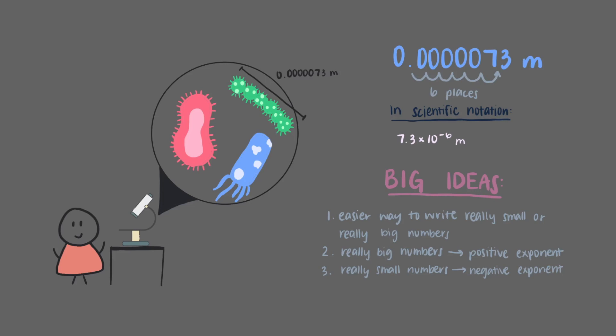When we have really big or really small numbers that contain lots and lots of zeros, it's easy to make mistakes when writing all of those zeros down. So in order to make less mistakes when doing problems, it's easier to use scientific notation.